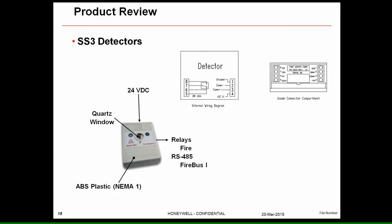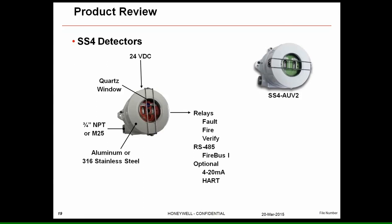The SS3 is the only non-explosion-proof detector in our portfolio. It has a small quartz window where the ultraviolet phototube is located, constructed from ABS plastic in a NEMA-1 enclosure — for indoor use only. It runs on 24V DC, has one fire relay, and allows connection to RS-485 for Firebus 1 access.